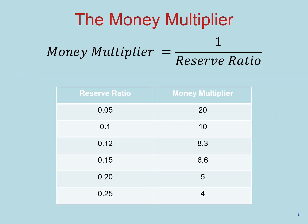Let's think about the money multiplier. The reserve ratio is the ratio of the amount of reserves that banks are holding in their accounts at the Federal Reserve to the total amount of deposits they are currently holding. Looking at this table: on one side we have the reserve ratio and on the other we have the money multiplier. As you can see, when we increase the reserve ratio, the money multiplier decreases — as the reserve ratio increases, the multiplier gets smaller.